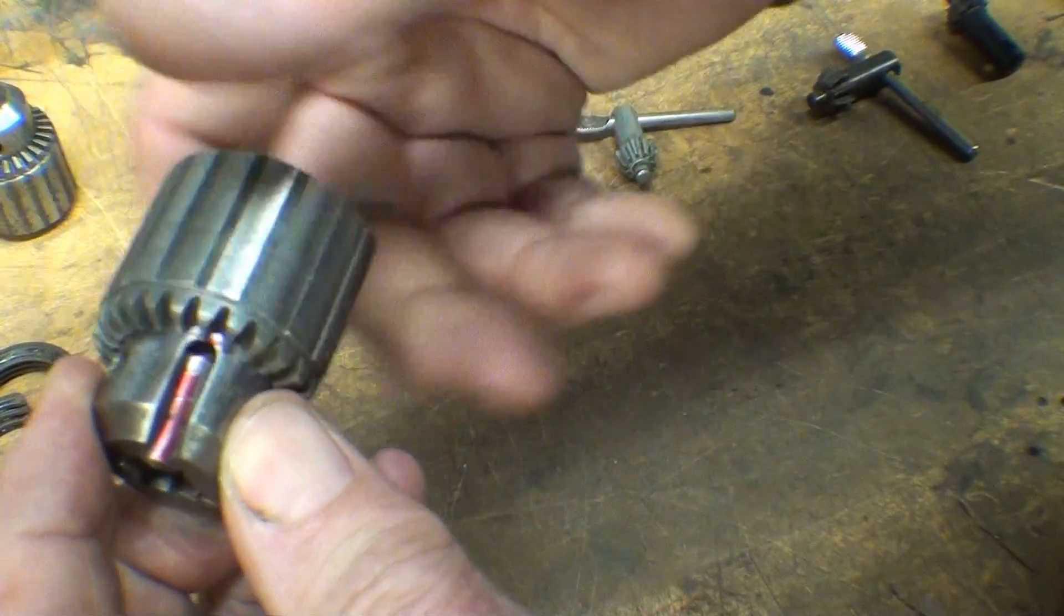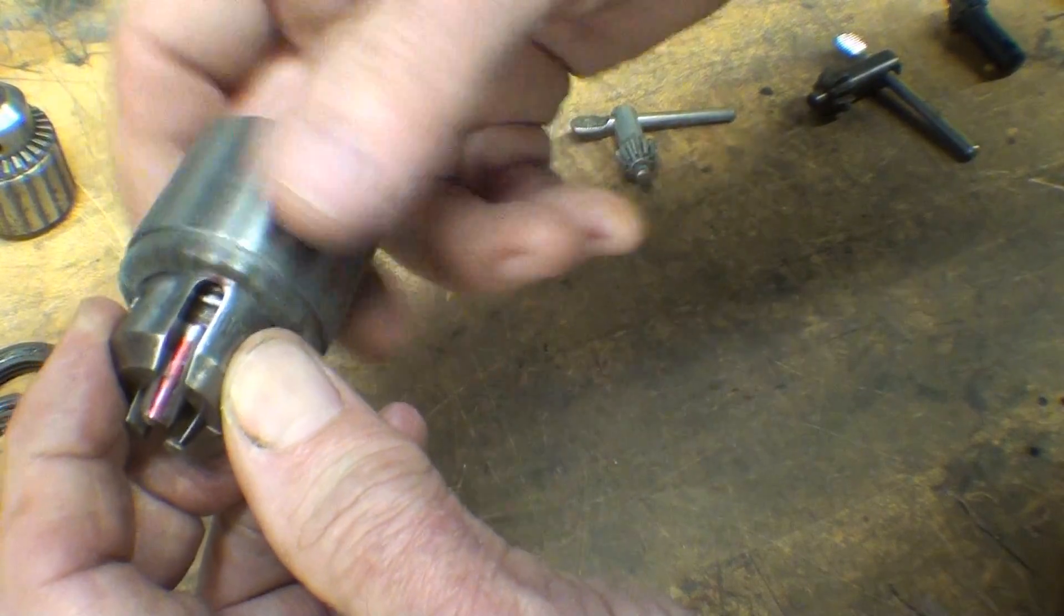Now watch the red jaw through the slot here, and you can see the teeth as I open it up. And the jaw teeth will start appearing right there. And just the opposite - when you tighten it, it goes the other way until the jaws come together.